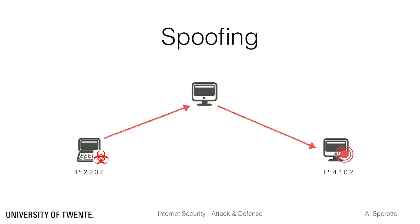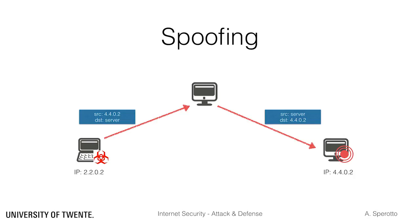Spoofing means that the attacker, which resides in let's say network 2.2.16, crafts a packet with a fake source address — the address of the victim, let's say 4.4.0.2. This is in principle sufficient to ensure that the reply traffic will be sent to the victim. The server has often no way to distinguish between a legitimate request from 4.4.0.2 and a spoofed one with the same source.